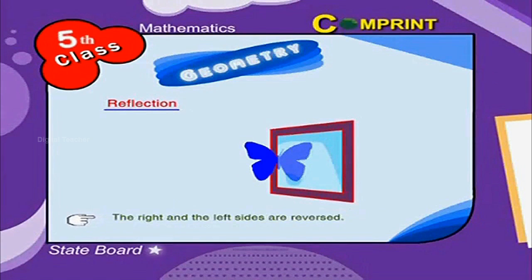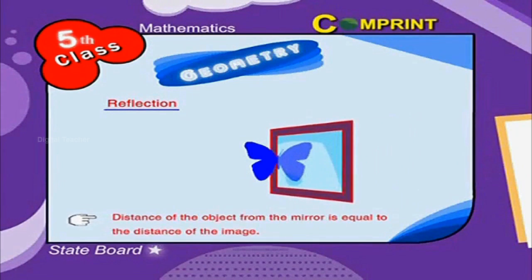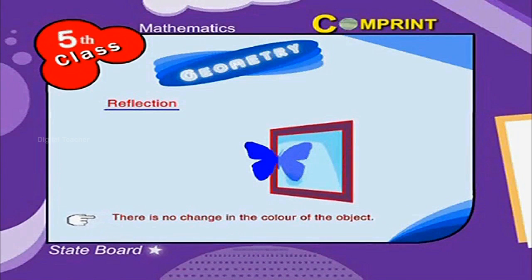The right and the left sides are reversed. Distance of the object from the mirror is equal to the distance of the image. There is no change in the color of the object. There is no change in the size.